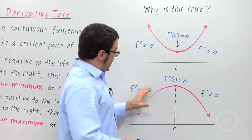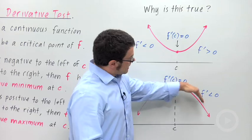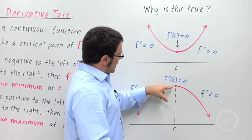And here is the opposite situation. You have the derivative going from positive to the left of c to negative to the right. And in the middle, you've got a relative maximum.